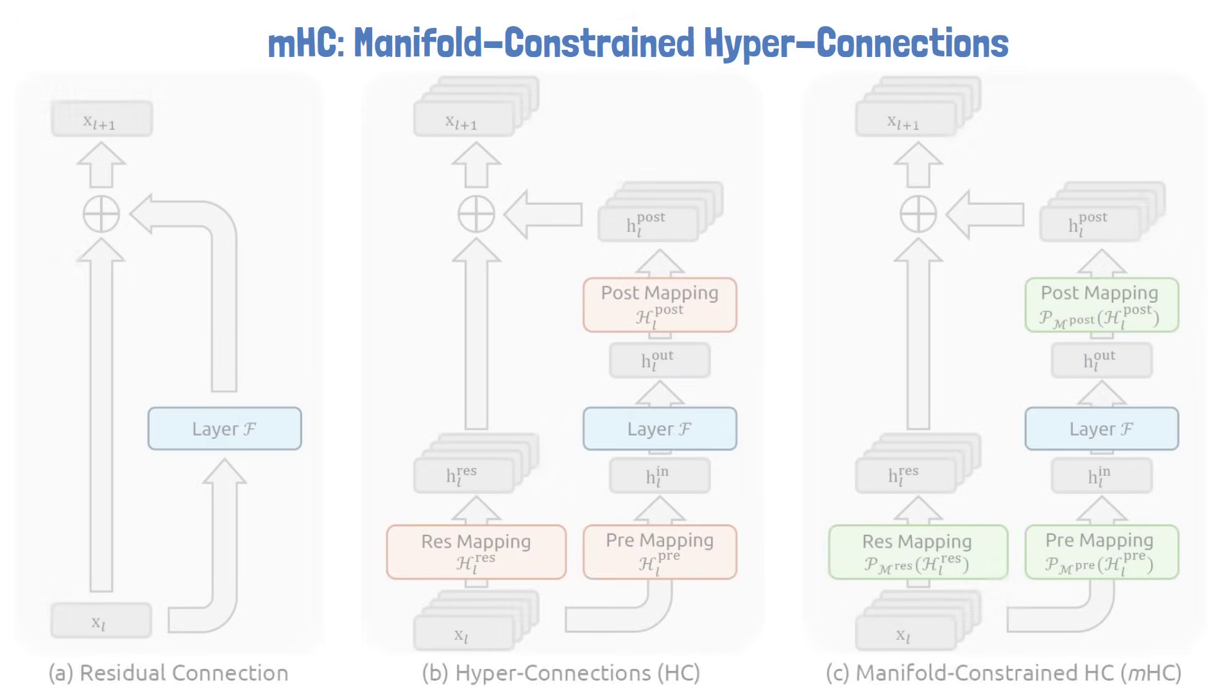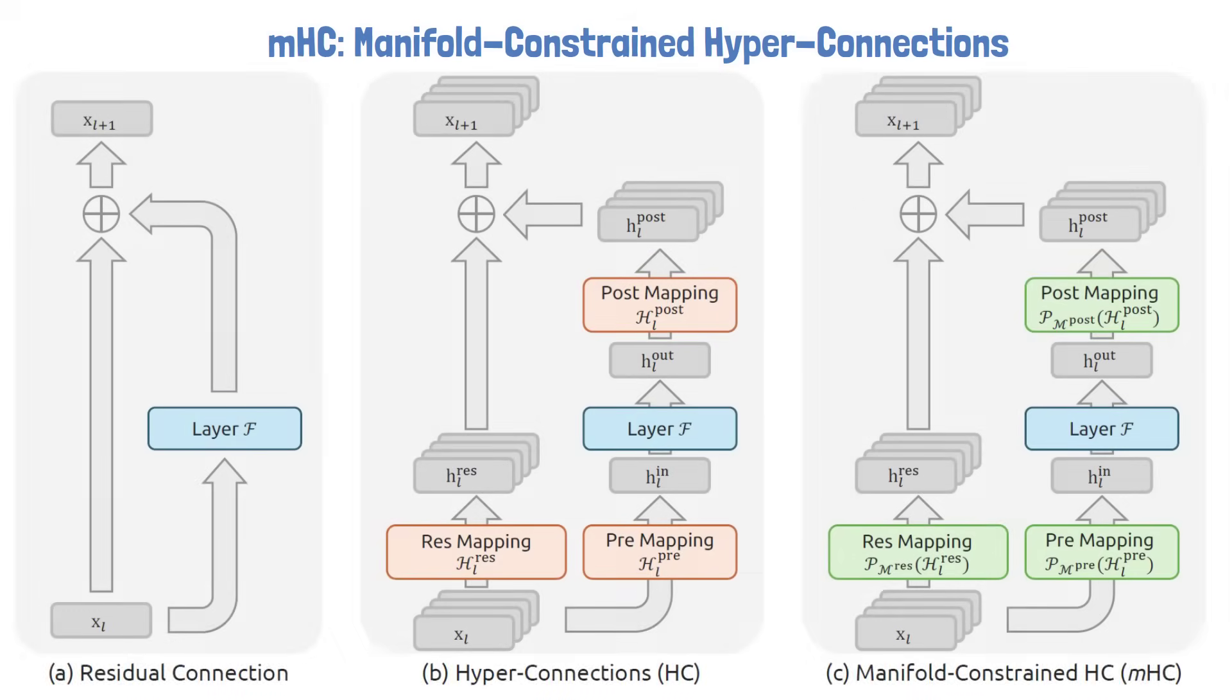This is exactly the problem that DeepSeek addresses with manifold constrained hyperconnections. In the following figure, we see the three residual methods together. A standard residual connection on the left, hyperconnections in the middle, and manifold constrained hyperconnections on the right. To address the instability introduced by hyperconnections, DeepSeek does not remove their flexibility. Instead, the core idea behind manifold constrained hyperconnections is to preserve the full expressive power of hyperconnections while restoring the identity guarantee that made residual connections work in the first place.